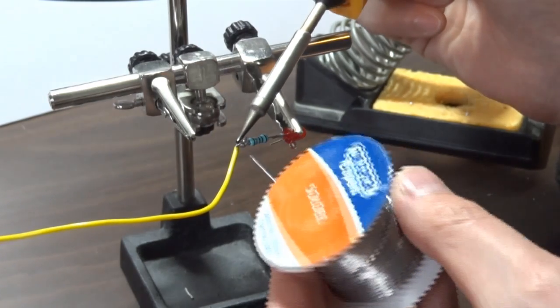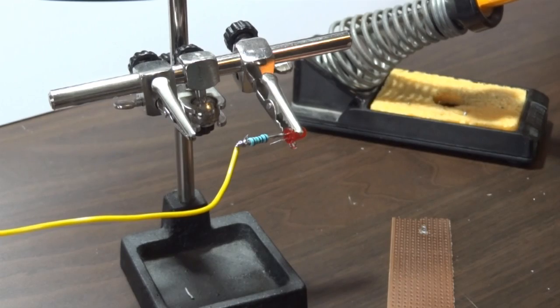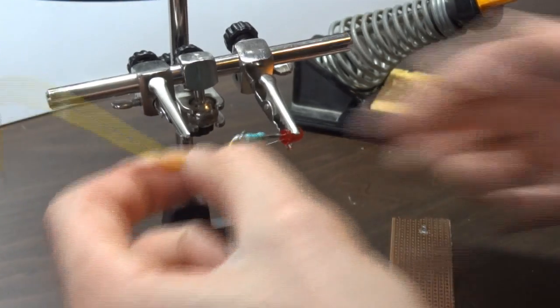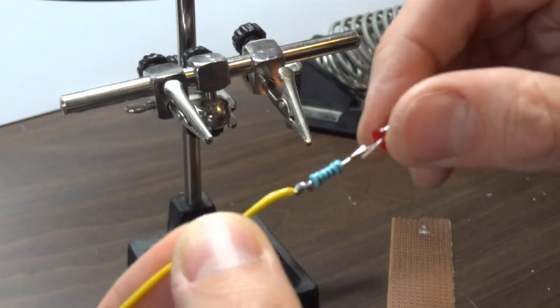So again, iron on, solder on, solder off, iron off. And that should give us a fairly good connection. We could put some sleeving over that if we wanted to. The other one I'm going to do slightly differently.